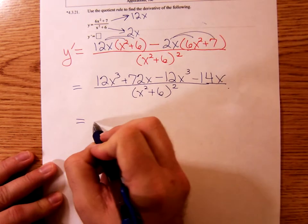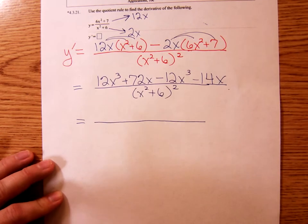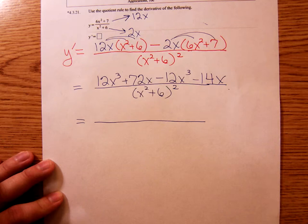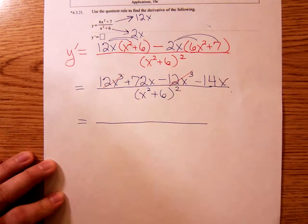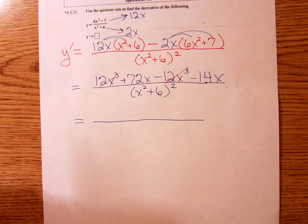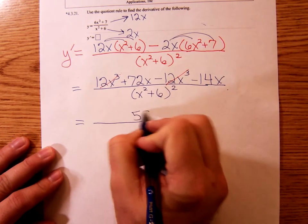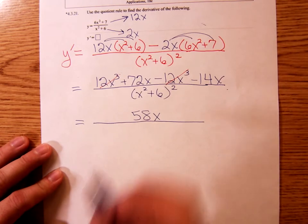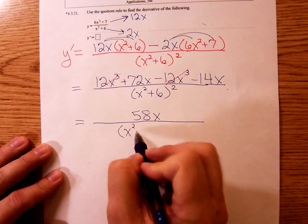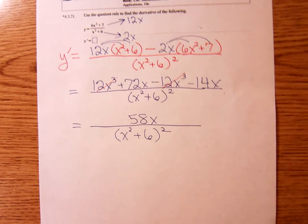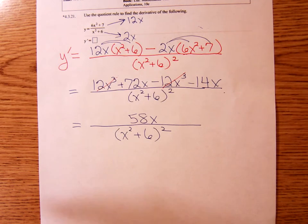Combining the like terms in the numerator, what have we got? The twelve x cubed minus twelve x cubed - those are gone. Seventy-two x minus fourteen x gives me fifty-eight x. And in the denominator, we still have x squared plus six quantity squared. Any questions there?